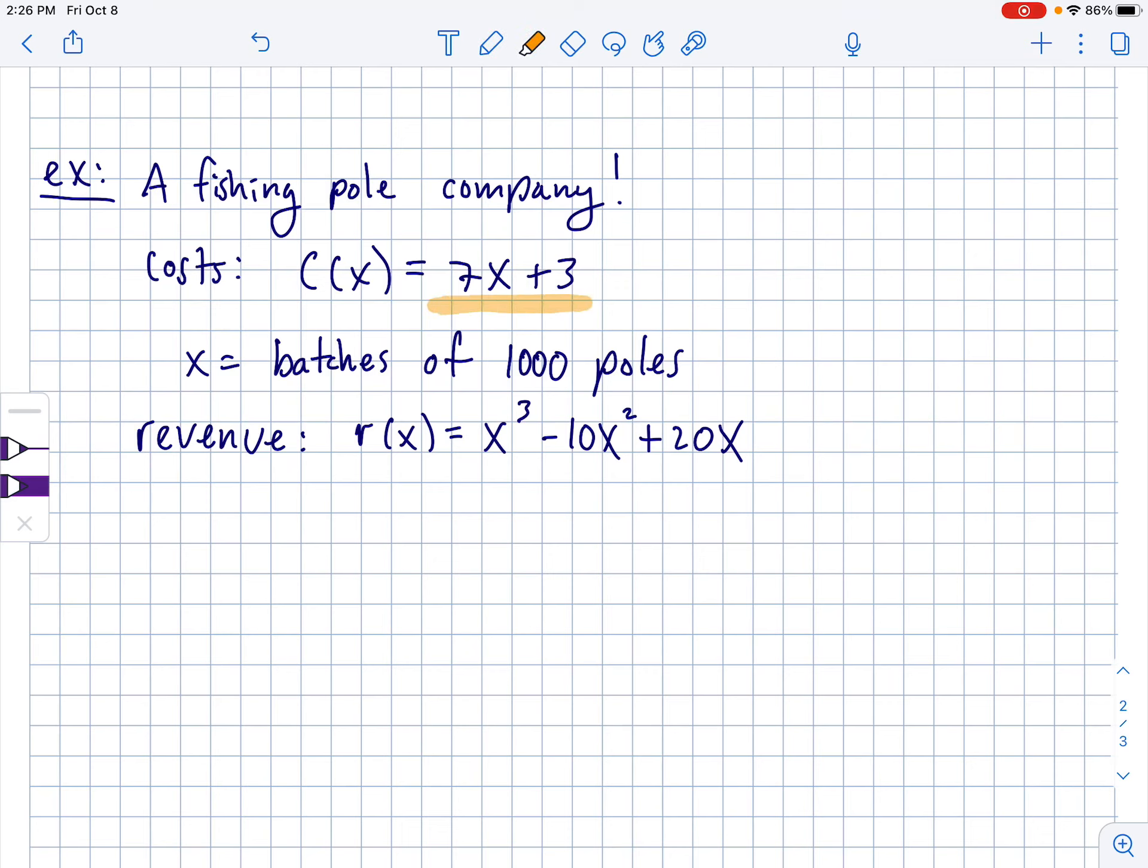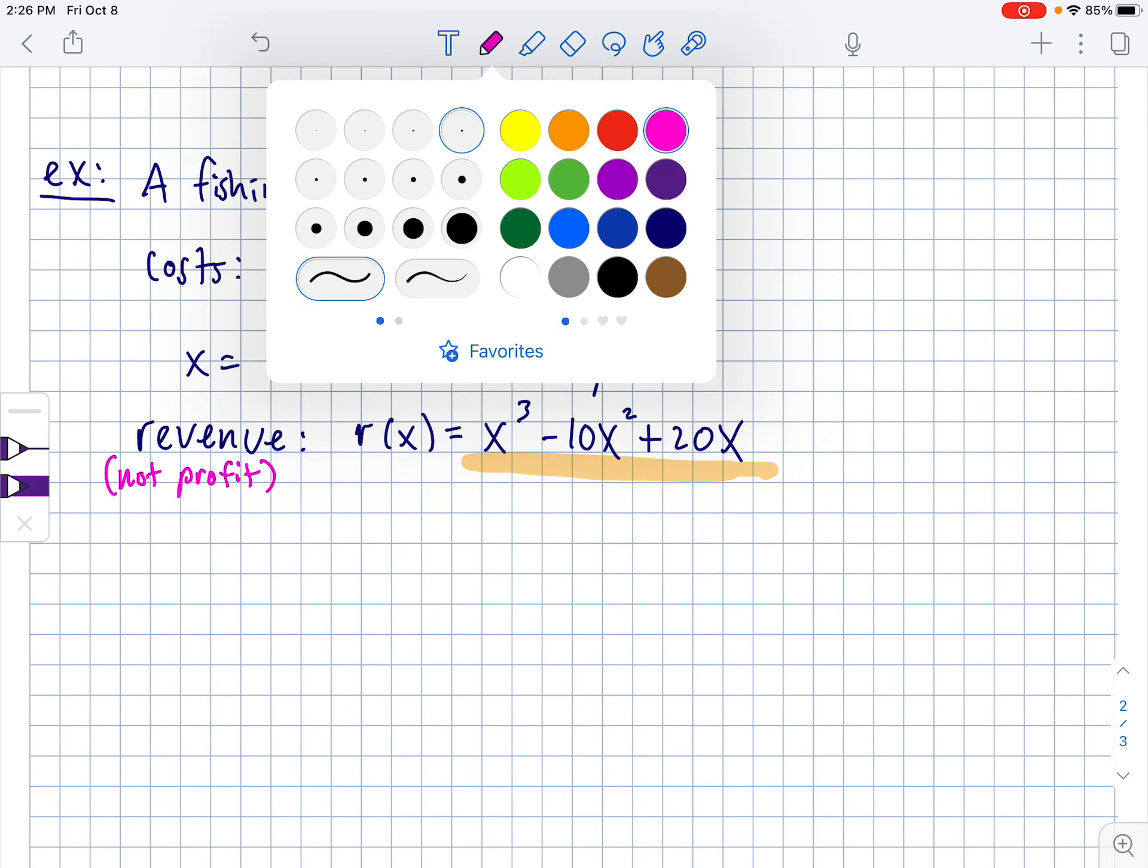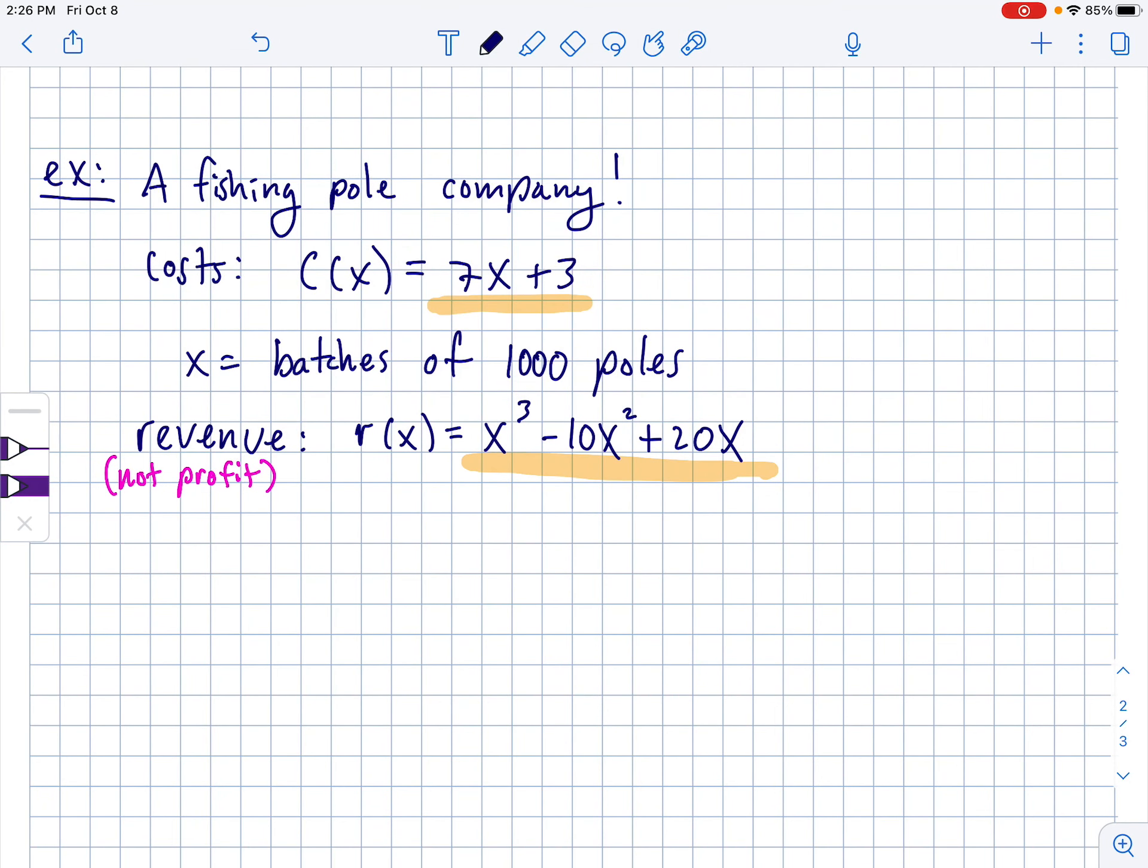Next problem. There's a fishing pole company. This is their cost that it costs them 7X plus 3, for every X being like a batch of 1000 fishing poles. And then when they sell them, they're going to make this much money in revenue. Now remember that revenue is, you know, it's not profit. It's just the money that they will make from selling the poles. They still have to subtract out their costs to be able to figure out the profit. So I forgot to write part of the problem. Part of the problem says they can't make more than 1200 poles in a day. So there's kind of a domain restriction is how you should think of it. Workers can't make more than 1200 poles in a day.